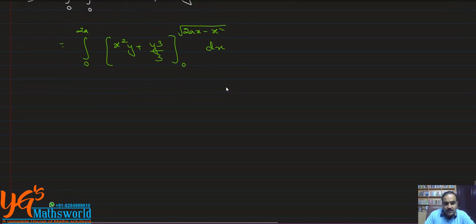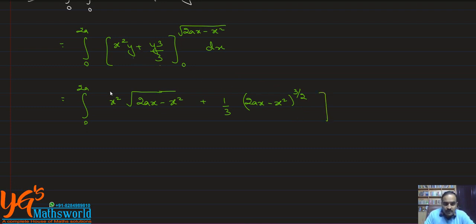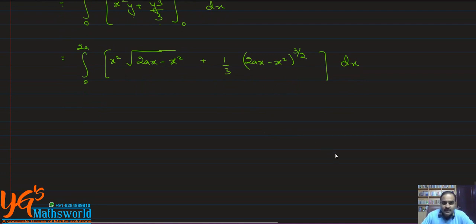Applying upper limit minus lower limit: from 0 to 2a, we get x² · √(2ax − x²) + (1/3)(2ax − x²)^(3/2). When we substitute the lower limit of 0, both terms give 0. To solve this integral, we use a substitution method.